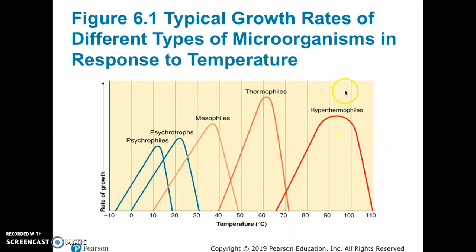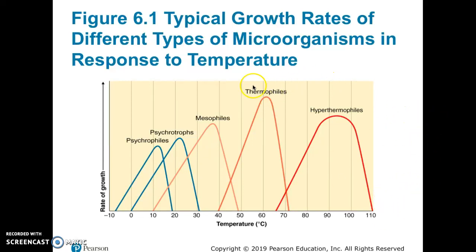Even hotter are the hyperthermophiles, which live near or above boiling temperature. You might wonder how they survive above boiling — they're often restricted to undersea vents, where the intense pressure of being deep underwater prevents the water from boiling and evaporating away. Both thermophiles and hyperthermophiles exist in very isolated environments.